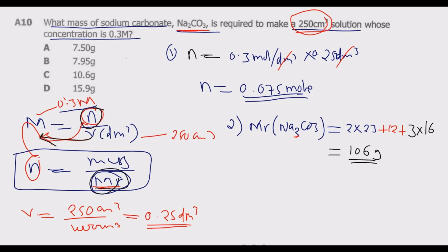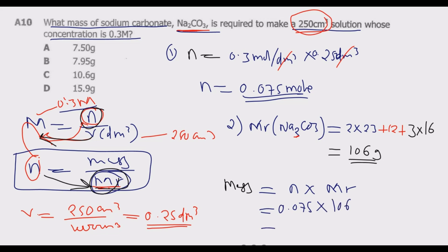Now we calculate the mass: mass = moles × RMM = 0.075 × 106 = 7.95 grams. Looking at the options, B is the correct answer. That is how you answer question A10 in detail. Thank you for joining me in this episode — please join me in the next episode as we look at question 11 onwards.